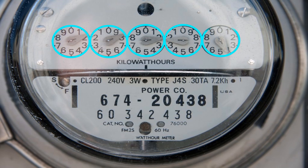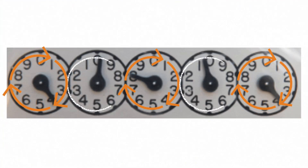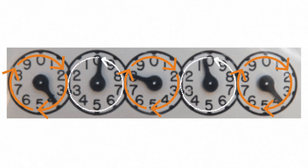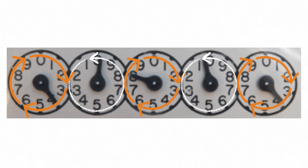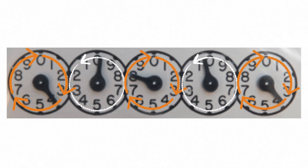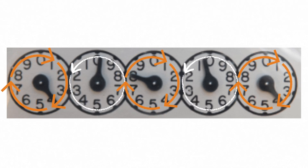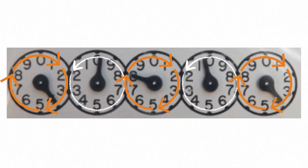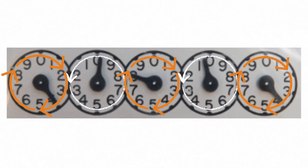This is an electromechanical meter. You will notice that there are five dials, and inside each dial is a pointer which indicates the number to be read. Observe the directions of the arrows in the five dials — the arrows represent the movement of each pointer. The arrows alternately turn clockwise and counterclockwise, meaning the pointers also alternately turn clockwise and counterclockwise inside each dial.